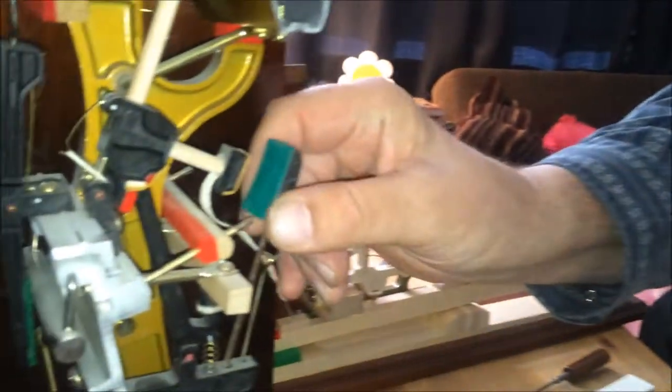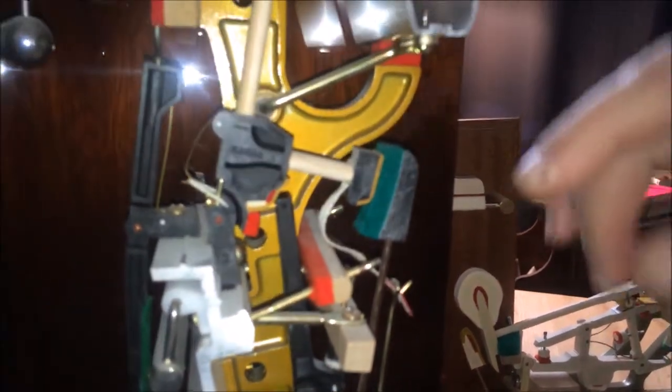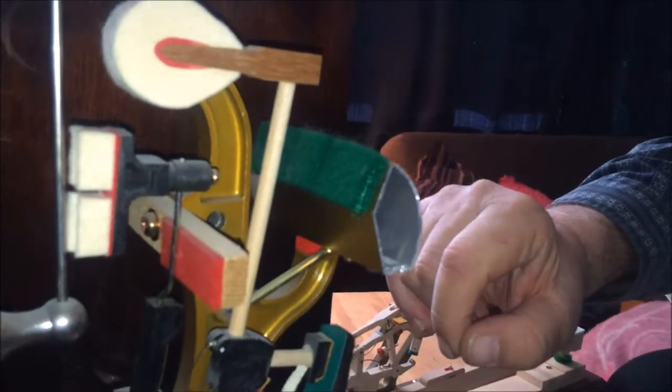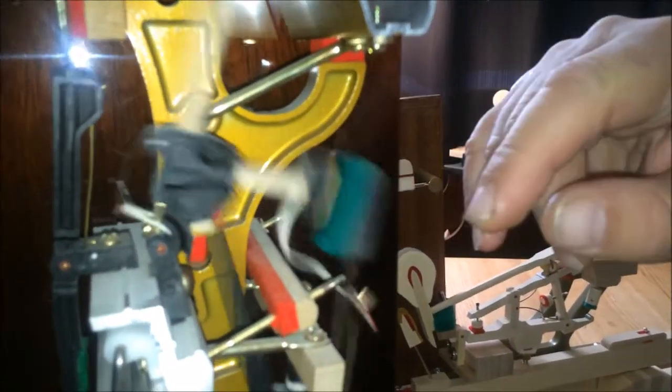Today we're going to talk about back checks. The back check on an upright piano, take a look down here. Here's your back check and your catcher. The way you adjust the back check on an upright is to adjust it so it checks at 5 eighths of an inch. If you have to adjust it, you just push back on or push forward.